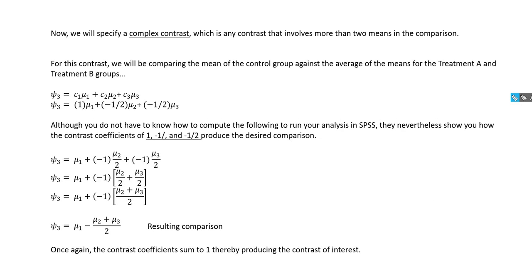Finally, we'll carry out a complex contrast comparing the mean for group one against the average of the means for groups two and three. We'll use a code of one for the control group, negative one-half for the treatment A group, and negative one-half for the treatment B group.